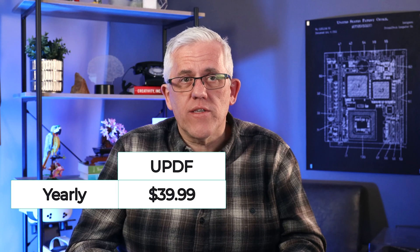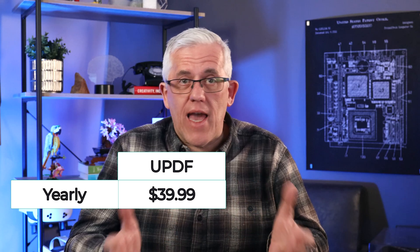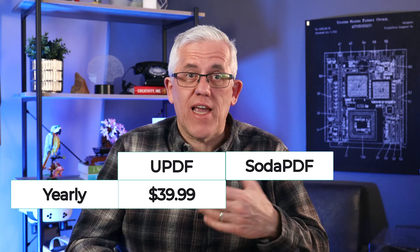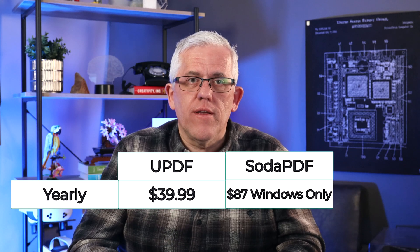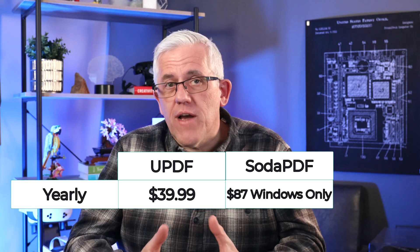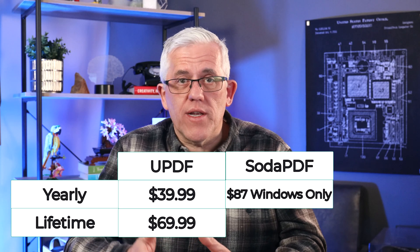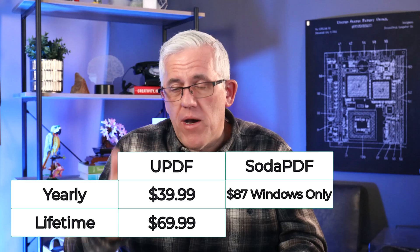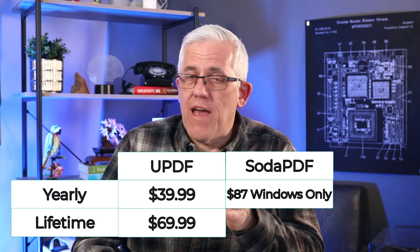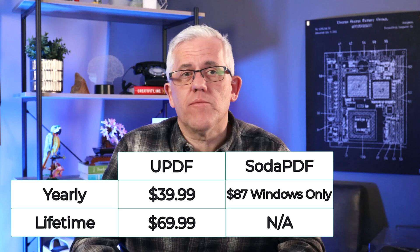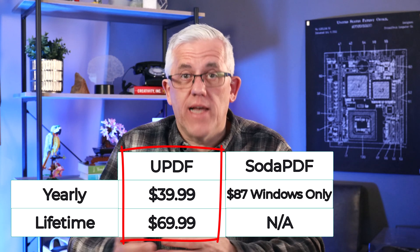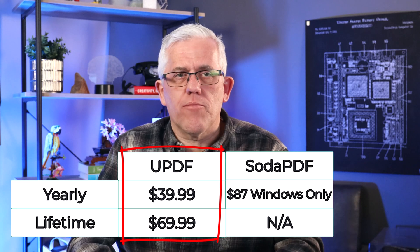The next thing you need to consider when choosing between the two tools is the price. If you need a yearly plan, you can find that with UPDF, and it only costs $39.99 US with one license working across Windows, Mac, Android, and iOS, while Soda PDF costs $87 US for the Windows-only version. Moreover, UPDF has a lifetime license for only $69.99 US. After you purchase, you can have the software for a lifetime and get lifetime updates and upgrades for that price. However, you can't find this with Soda PDF — they don't offer a lifetime subscription. So it's obvious that UPDF is less expensive and a better option when you're considering the price alone.